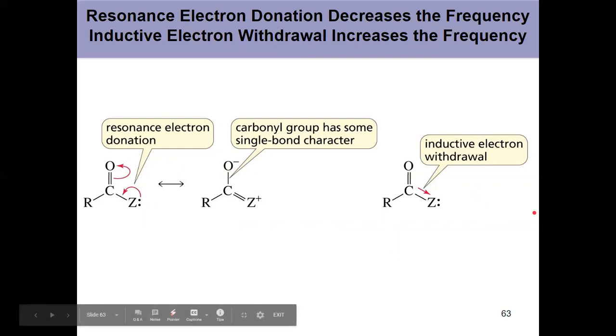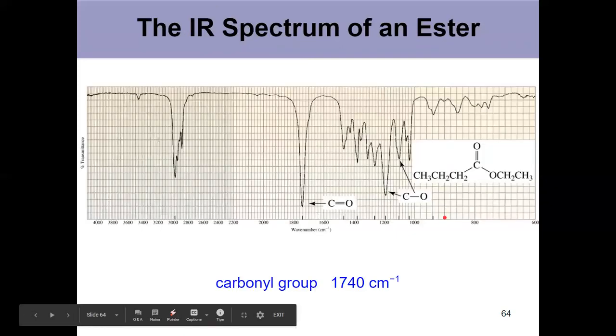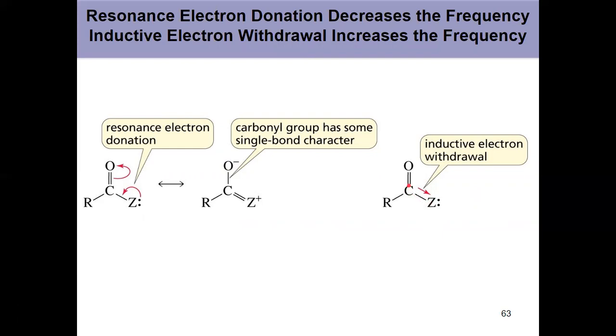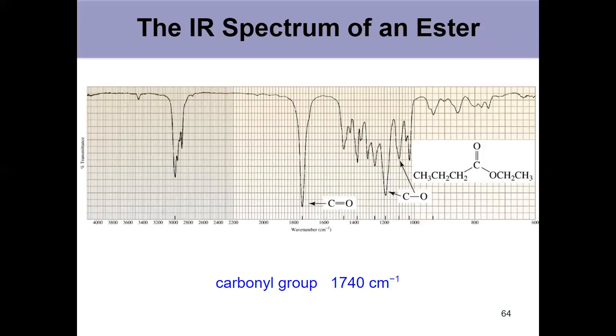This is paired with the fact that if the substituent is electronegative, which it usually is, it will withdraw electrons inductively. The question becomes: is it more donating by resonance or withdrawing inductively? For an ester, the carbonyl shifts left, appearing at higher frequency with less single bond character and higher wave number. This means the primary effect is inductive electron withdrawal. Oxygen doesn't want to tolerate a positive charge, so it's not donating by resonance. A slightly higher carbonyl peak at 1740, further left, indicates you might be dealing with an ester—a carbonyl with oxygen right next door.